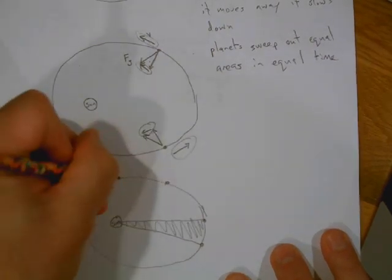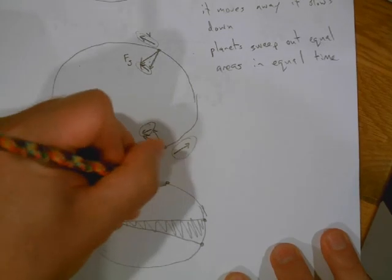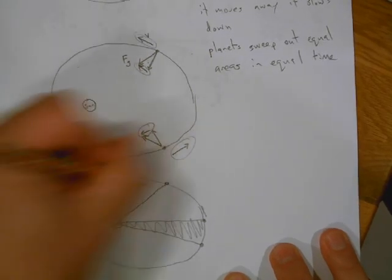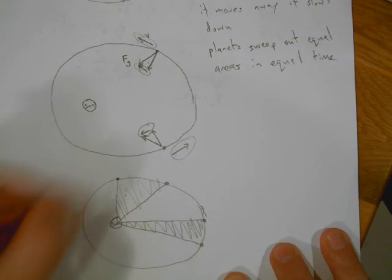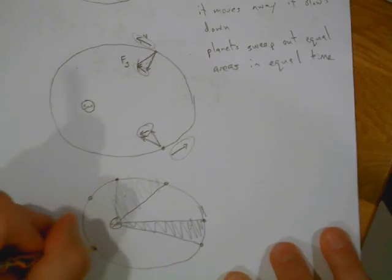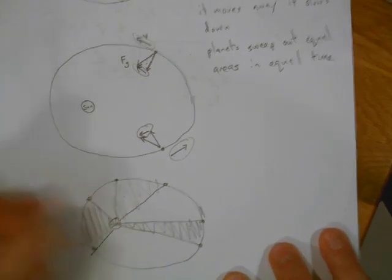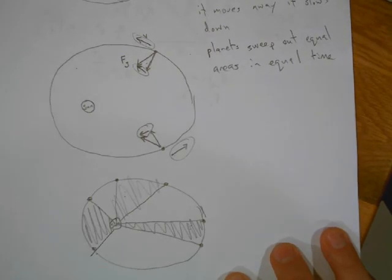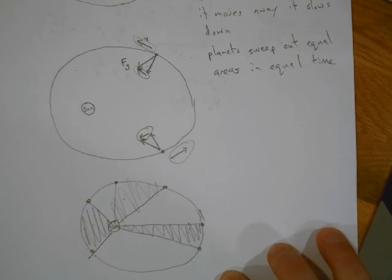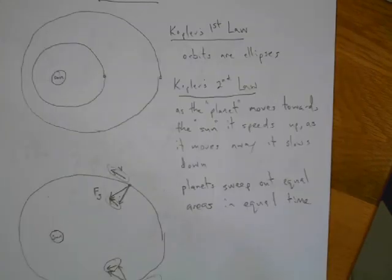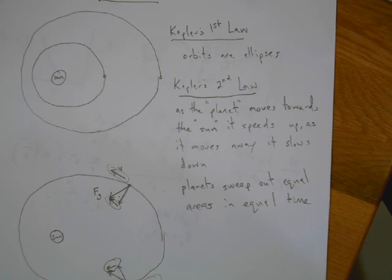It's going to be speeding up, so it's going to have traveled a little bit farther, so it's going to look something like this. Well, this area is going to equal this area. If I was to do it over here, it looks something like this, or from there to there it'd be 60 days. All of these areas have to be the same. The planet will sweep out equal areas in equal amount of time. Okay, so Kepler's first law, Kepler's second law.